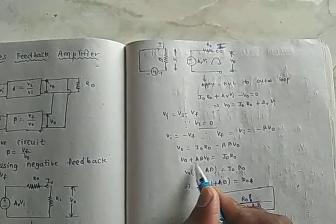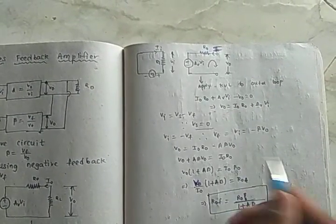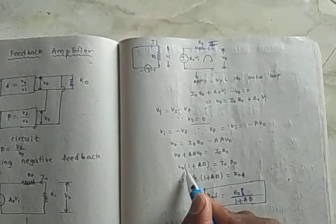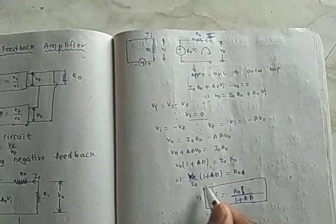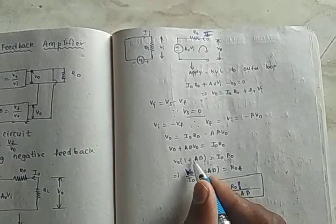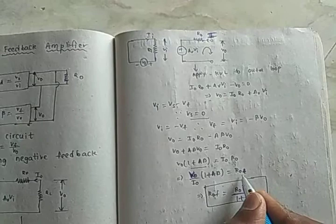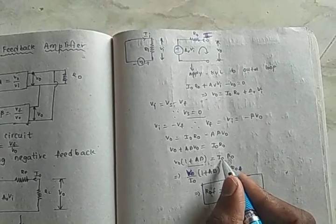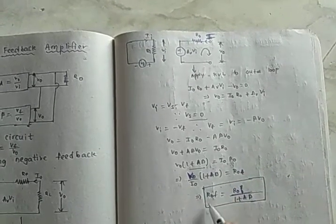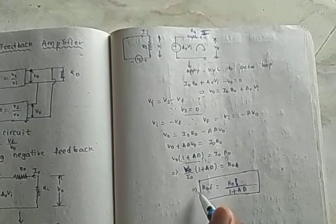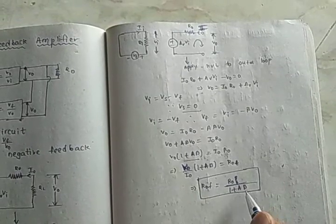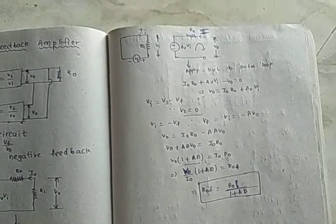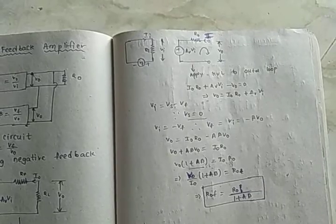Take this A beta V0 to the left side: V0 plus A beta V0 is equal to I0R0. Take common of V0: V0 into 1 plus A beta that equals to I0R0. And send this to that side, the right side, and bring I0 to left side. Then this comes to R0F is equal to R0 by 1 plus A beta. This is the output impedance of the voltage series feedback amplifier.